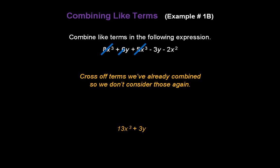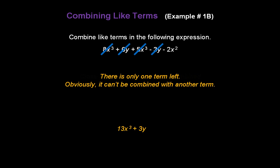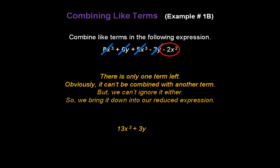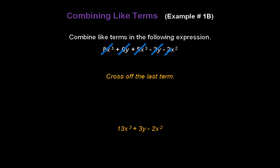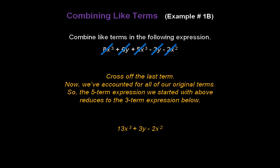Cross off the terms we've already combined. There's one term left — minus 2x to the second power. It can't be combined with another term, but we can't ignore it. We bring it down into our reduced expression, making sure to include the minus sign. So we end up with 13x cubed plus 3y minus 2x squared. The original 5-term expression reduces to a 3-term expression.